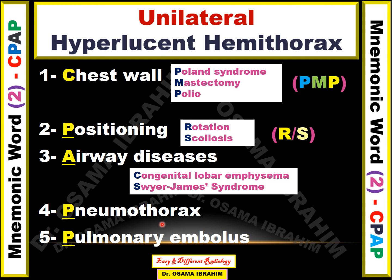Pneumothorax and pulmonary embolus can also cause unilateral hyperlucent hemithorax.